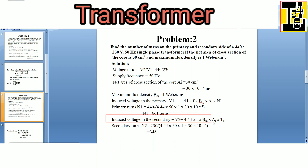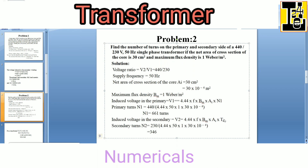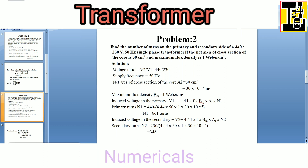The induced voltage in the secondary is V2 is equals to 4.44 into f into Bm into AI into N2. We get N2 is equals to 230 divided by 4.44 into 50 into 1 into 30 into 10 raised to minus 4. That gives N2 as 346 turns.